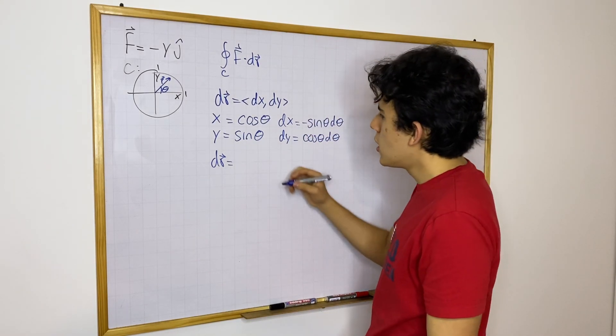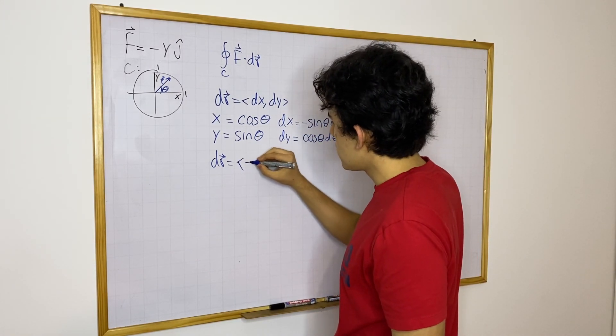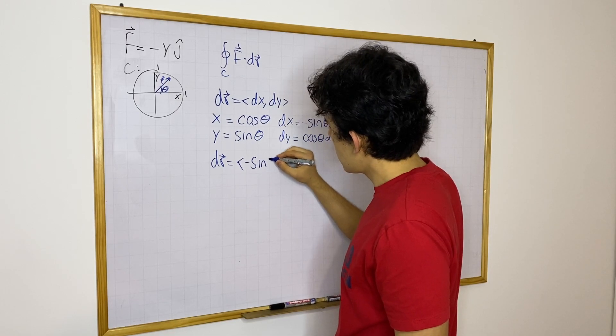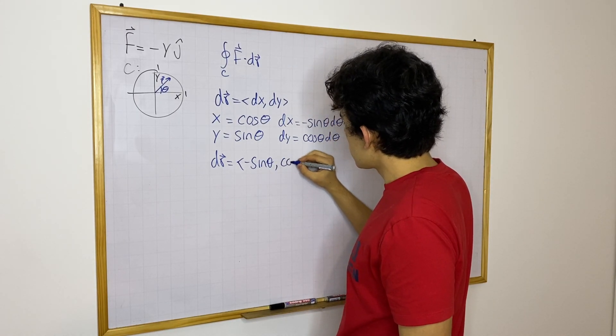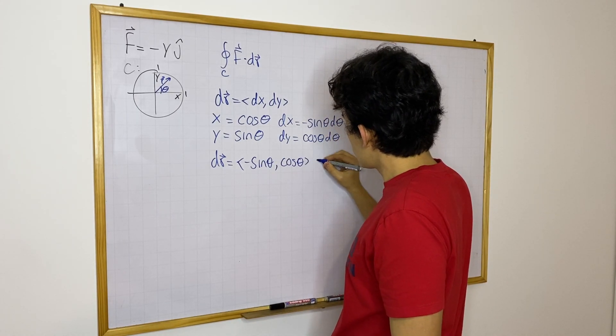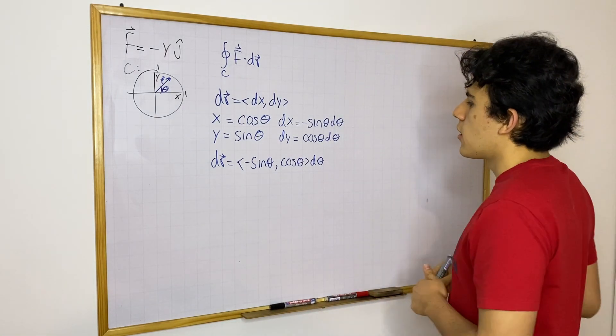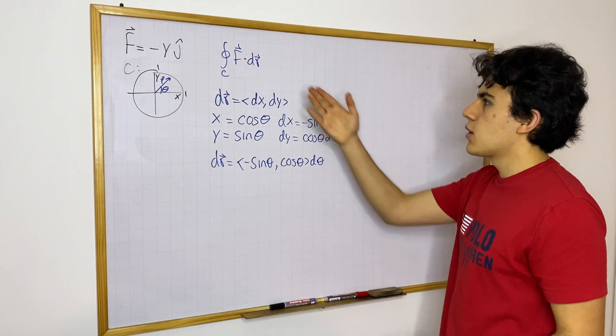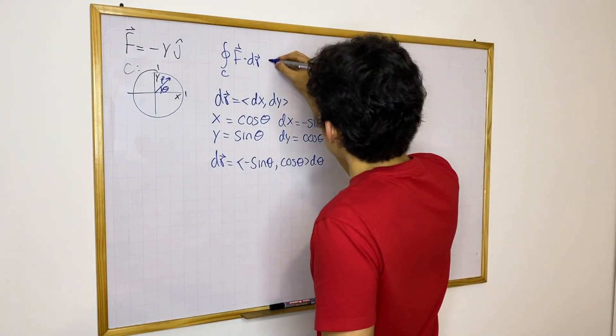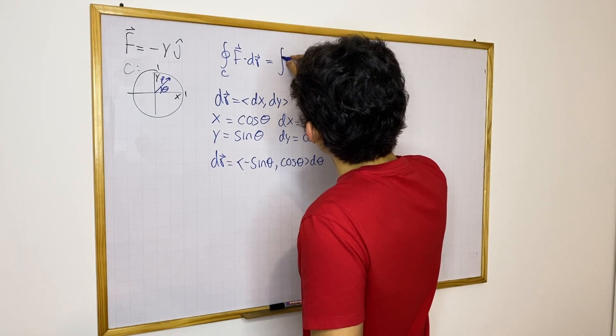Okay. So this is dr and this is going to be equal to cosine theta. So this is dr and this is great because we could easily rewrite f like this. So this will be